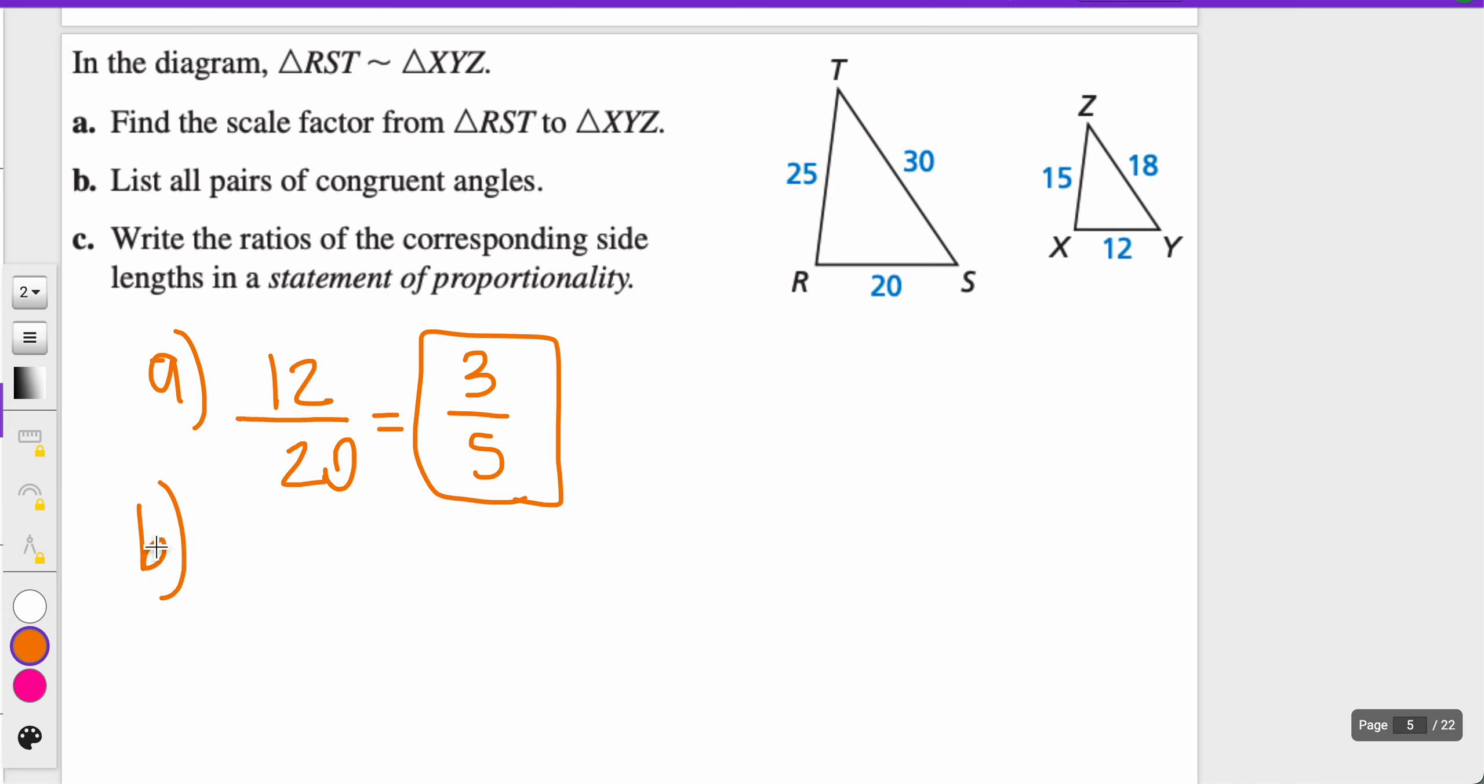For letter B, list all pairs of congruent angles. Angle R is congruent to angle X, angle T is congruent to angle Z, and angle S is congruent to angle Y. Another way you can do that is the stack method, RST over XYZ, and it'll easily show you what angles match with what.